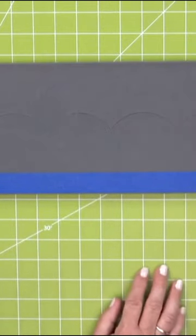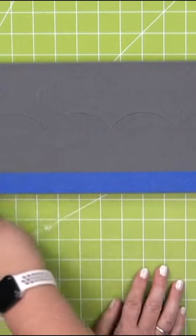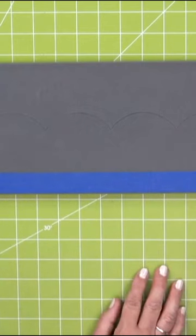Now this is a trick that I teach folks. I put painter's tape on this die because then I can determine how wide I want my scallop or how wide I want my waves.